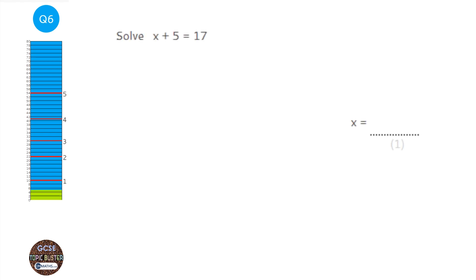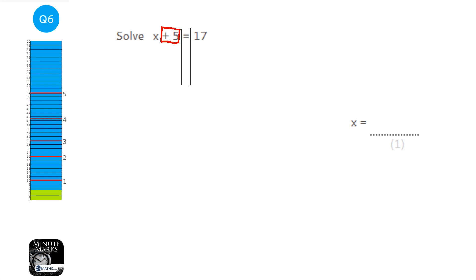We're asked to solve, which means find out what x is. We need to find a number we add 5 to to get 17. We don't want the plus 5 on the left-hand side, so we do the inverse operation — take away 5 from both sides. On the left we're just left with x, and on the right 17 take away 5 is 12. So x equals 12. We can check: 12 plus 5 is 17.